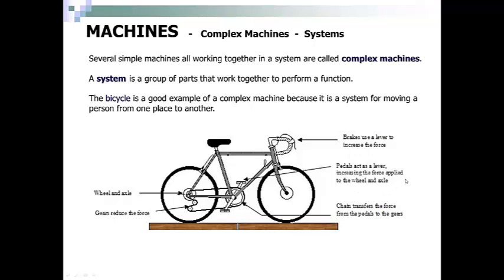You have pedals acting as a lever to increase the force applied to the wheel and axle. You have brakes used as a lever to increase the force. It uses friction to slow your bike down.